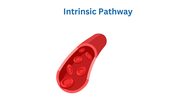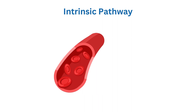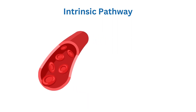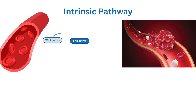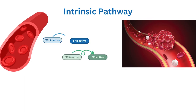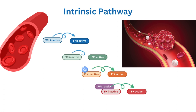The intrinsic pathway is initiated by damage inside the blood vessel itself, exposing collagen and activating platelets. The exposed collagen activates Factor 12, or Hagemann factor, which then activates several other steps, of which activation of Factor 10 is the last step.